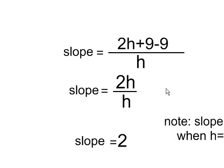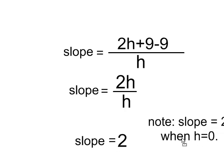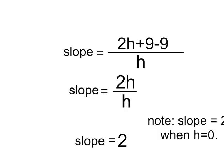I know that 9 minus 9 is 0, so I'm left with 2h over h, and those h's are going to cancel, and technically they're still there, and so h can't be equal to 0, but I know that my slope is going to be equal to 2. So, there's the solution.